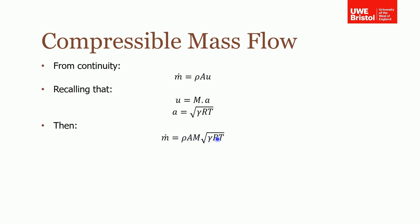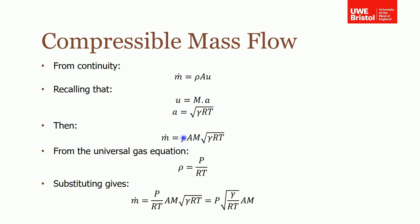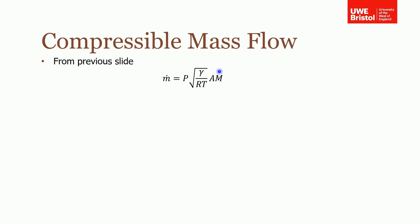Now we can replace the density of the fluid by recalling from the universal gas equation that rho is equal to P over RT — normally PV = mRT, so M over V is rho. We can substitute that into our mass flow equation. We now have R and T appearing a couple of times, so if we collect those terms we can simplify, and we end up with mass flow as a function of pressure, the square root of gamma over RT, the cross-section area, and the Mach number.